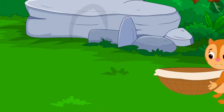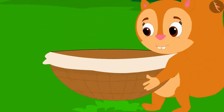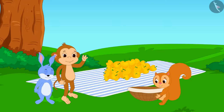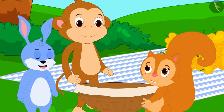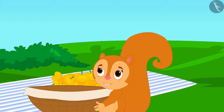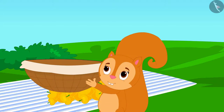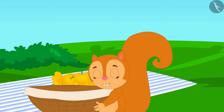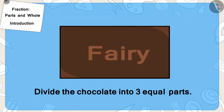Chanda was passing by and she had an empty basket. Babban and Bunny asked for her basket and told her the entire story. Chanda told them she could give them her basket, but she wanted an equal share of the chocolate. So now they had to divide the chocolate into three equal parts.